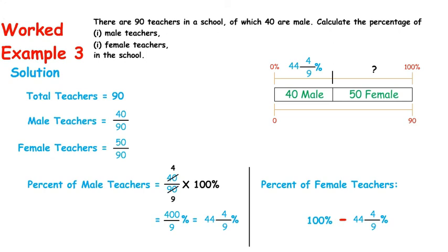100 minus 44 and 4/9 equals 55 and 5/9. Percentage of female teachers are 55 and 5/9 percent.